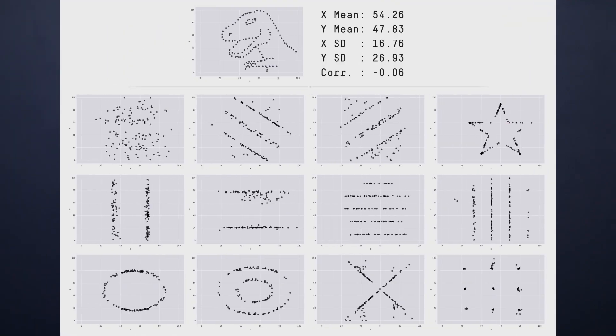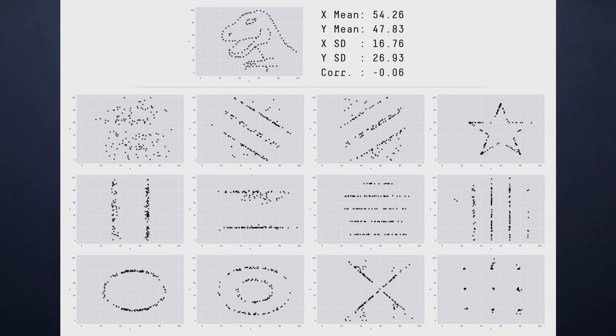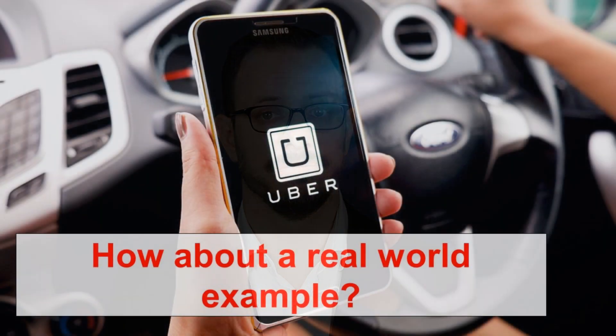All 13 of these graphs — from the lines, to the circles, to the stars, to the T-Rex — all have the exact same mean, standard deviation, and maximum and minimum on two dimensions. The moral of the story is the best way to avoid the flaw of averages is to always visualize your data. What you think is a normal distribution or bell curve could actually be a Raptor.